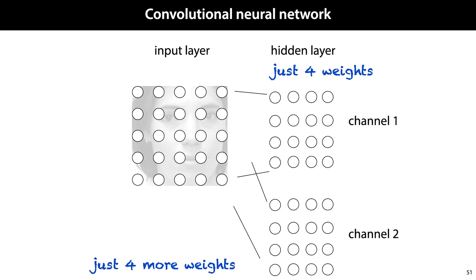In a traditional feed-forward network, that would give us 25×32 connections with as many weights. Here, we have just 32×4 connections and only 8 different weights in total, applied over these 128 connections.